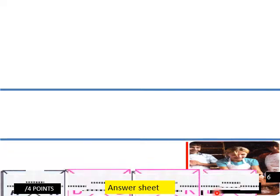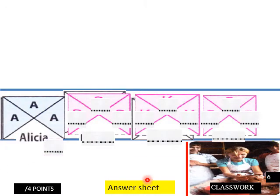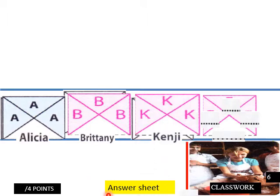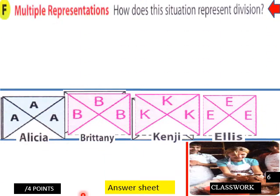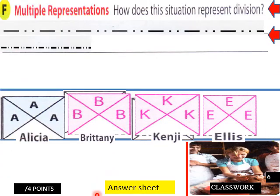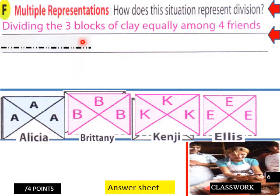Page six classwork. Here's our blocks again. And here's the reveal again on these blocks of clay. Again, stressing the visualization of this arithmetic fraction problem here. Multiple representations. How does this situation represent division is the question. Dividing the three blocks of clay equally among four friends represents three divided by four.